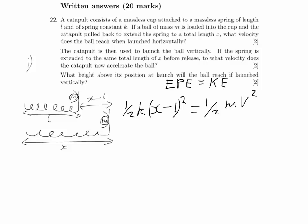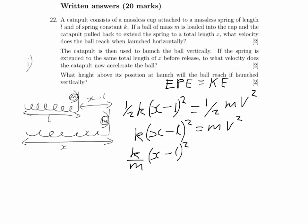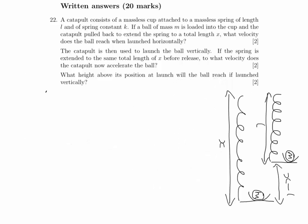So elastic potential energy is half k times (x minus L) squared, and we equate that to the kinetic energy, half mv squared. Cancelling the halves gives us k(x minus L)² = mv². Dividing both sides by m gives k over m times (x minus L) squared equals v squared, and taking the square root gives our velocity: v = √(k/m) · (x − L).